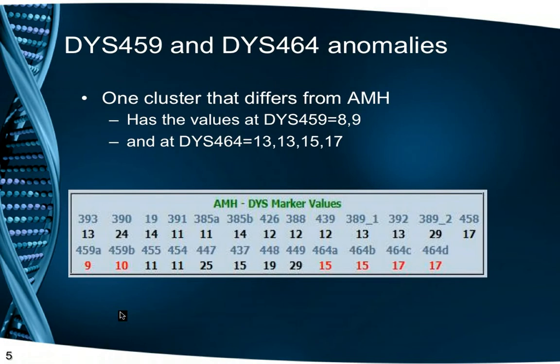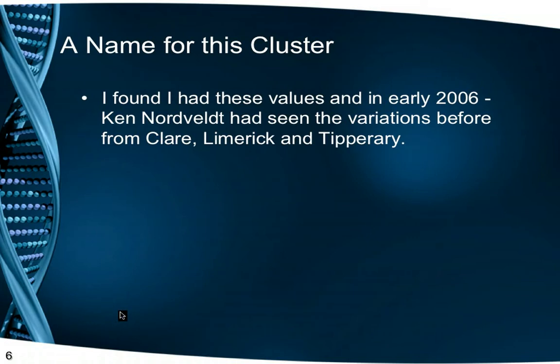As more and more people submitted their DNA for testing, different patterns started to emerge. When compared with the Atlantic Modal Haplotype, one cluster had two glaring differences: STR DYS 459 was 8-9 rather than the 9-10, and DYS 464 was 13-13-15-17 against 15-15-17-17. I found I had these values, and in early 2006, a researcher, Dr. Ken Nordvald, stated on a DNA forum that he had seen these values before, from Clare, Limerick and Tipperary. He identified those that had those values appeared to show a third Irish cluster.